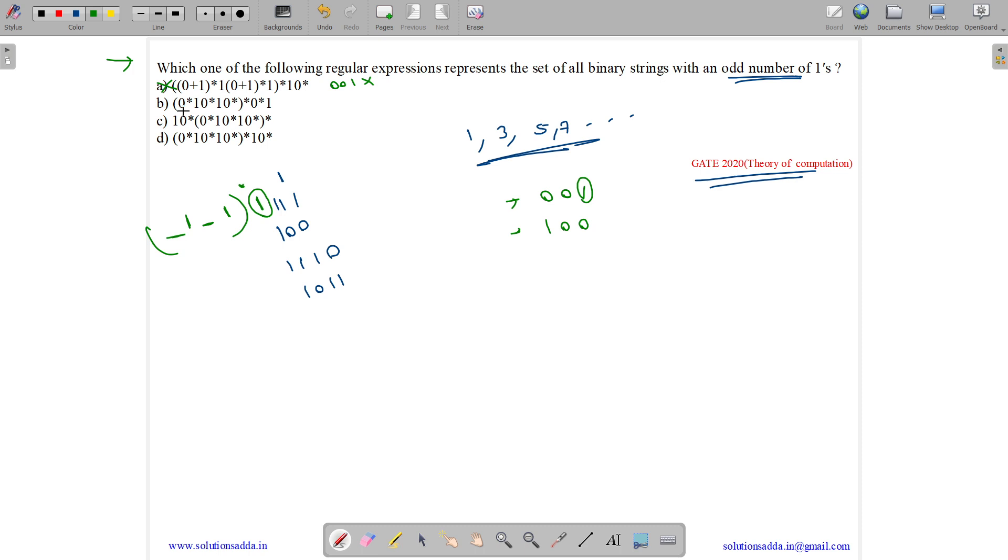Now let us see whether we can generate 001 from here. So we have 0 star 1, 0 star 1, 0 star whole star, 0 star 1. So we can have 1 from here and we can have 00 from here and we can make this as epsilon. So 001 can be generated.